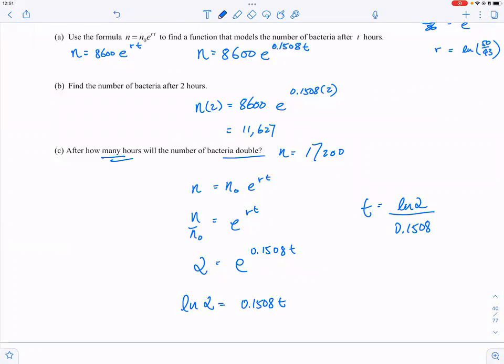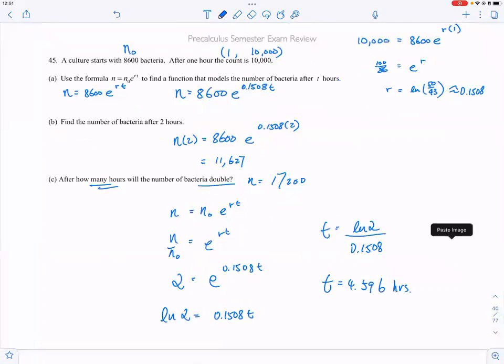If you are taking chemistry, this equation may look familiar to you because that's the first-order equation. And t equals 4.596 hours. So after this amount of hours, the bacteria will double. Here we go.